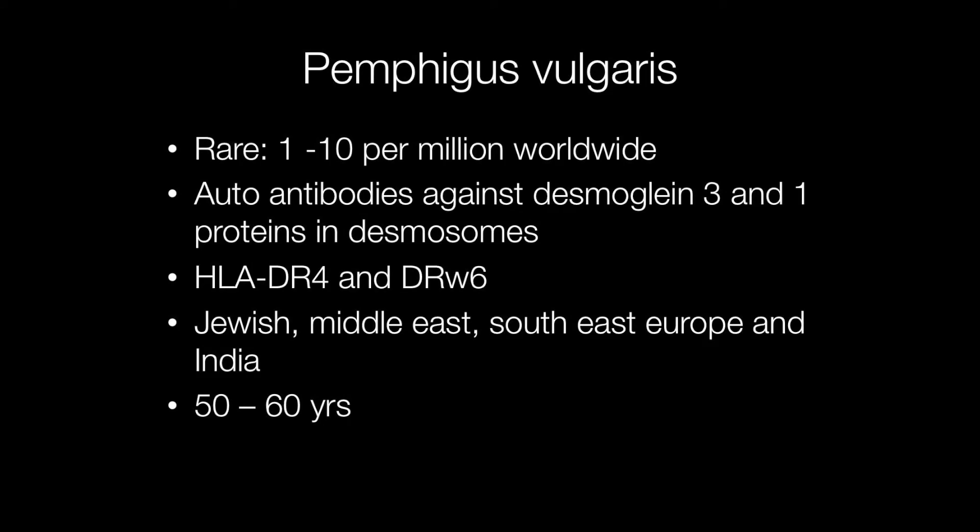Pemphigus vulgaris is a serious autoimmune skin condition causing bullae to form. It is rare, affecting 1 to 10 per million people worldwide. Bullae form because antibodies are produced against Desmoglein 3 and Desmoglein 1 in the desmosomes. This causes the keratinocytes, or skin cells, to separate and fall apart, resulting in bulla formation.